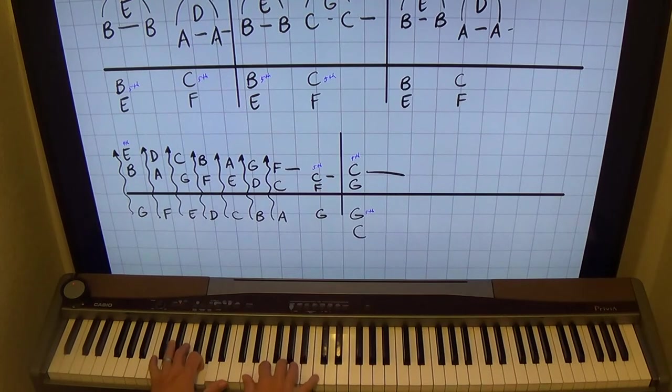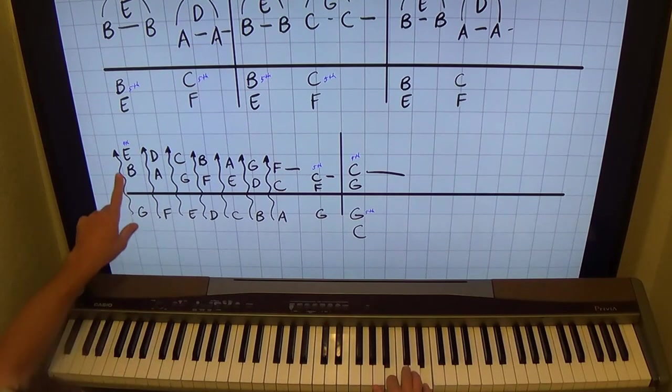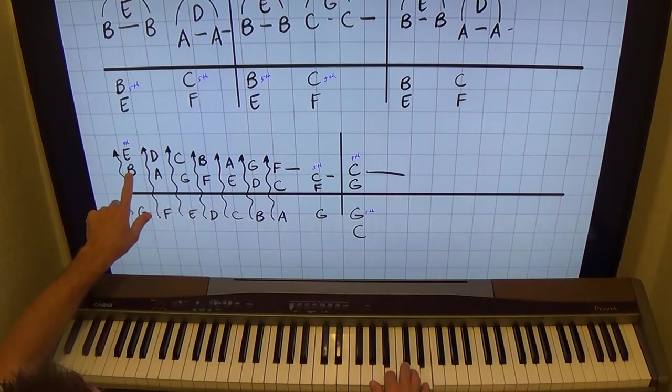Alright. So I just have descending fourths here, and we start off with B-E. That little arrow just means roll it up. So B-E, and I'm going to play all of them with two and five. I think that's the easiest way.